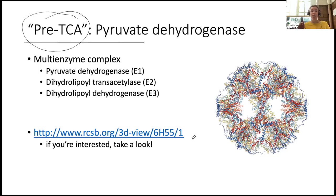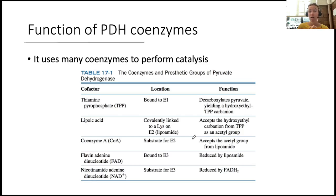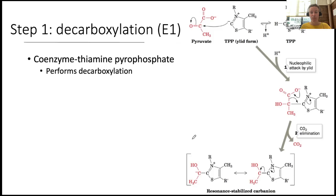The pyruvate dehydrogenase complex, in addition to its three enzymes, uses many coenzymes and cofactors. Many are called coenzymes because they are strongly linked or covalently attached to their enzyme. We will see how each is used over the next few slides. The first new one is TPP; we'll also be introduced to lipoic acid, CoA, FAD, and NAD.